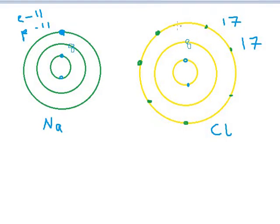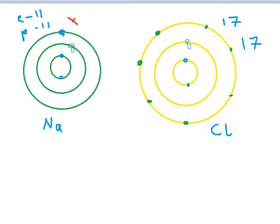Now, chlorine requires one electron and sodium has one extra electron. According to the octet rule, the outermost orbit must have 8 electrons. So if sodium loses its outermost electron, that orbit will disappear and the second orbit — which already has 8 electrons — becomes the outermost, making it octet. Chlorine, having 7 electrons in its outermost orbit, is unstable and requires one electron to reach 8 and become stable. So sodium transfers its electron to chlorine.